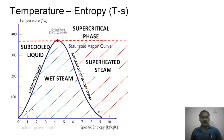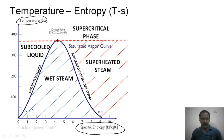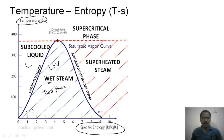This is the temperature-entropy diagram. On the y-axis there is temperature, and on the x-axis there is specific entropy. There are three different regions: the region on the left-hand side of this dome is the liquid region, inside the dome is the liquid plus vapor region — also known as the wet region or two-phase region — and on the right side of the dome is the superheated region.